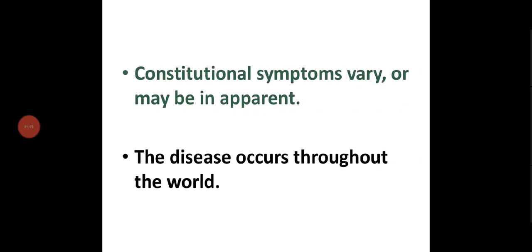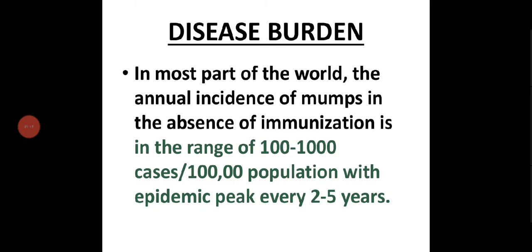Constitutional symptoms may vary or may be inapparent. The disease occurs throughout the world. The annual incidence of mumps in the absence of immunization is in the range of 100 to 1,000 cases per 10,000 population, with epidemic peaks every two to five years.